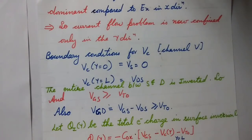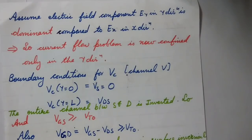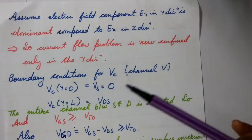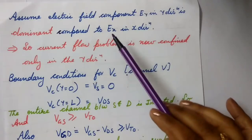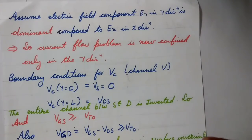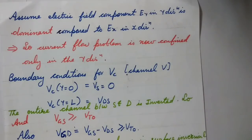Just as we have the XY coordinate system, the electric field also has two components: EX and EY. The next approximation is that the electric field component in the Y direction, EY, is taken to be dominant compared to EX in the X direction. This approximation means that current flow is considered only in the Y direction, reducing the three-dimensional problem to a single-dimensional current flow problem.